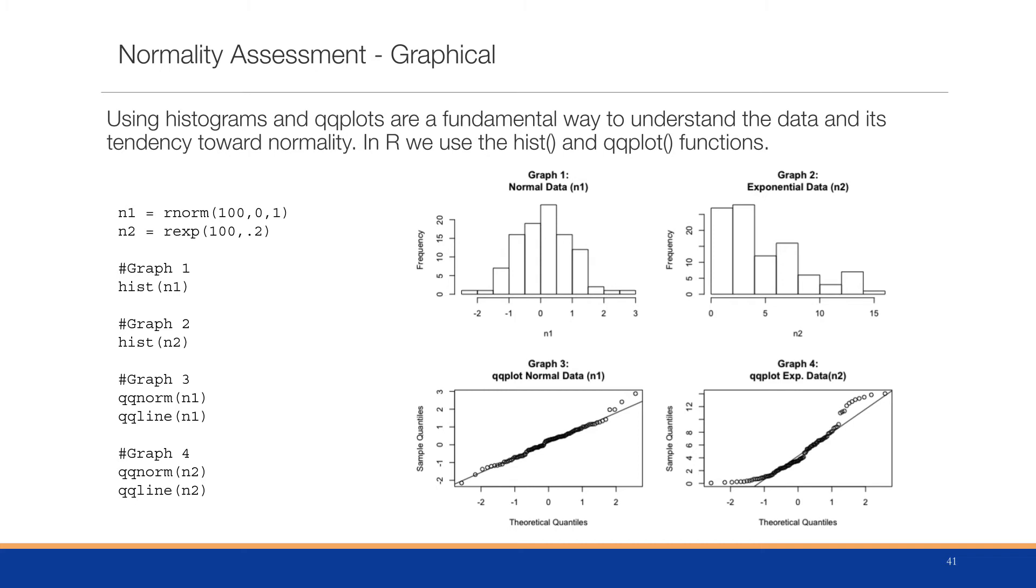Then we're going to graph them. So we're going to basically graph using histograms. So we use the hist function in R. Here we do hist n1 and hist n2. And it's represented by the two graphs up above. And we can see the first one definitely looks normal, and the second one doesn't look so normal.